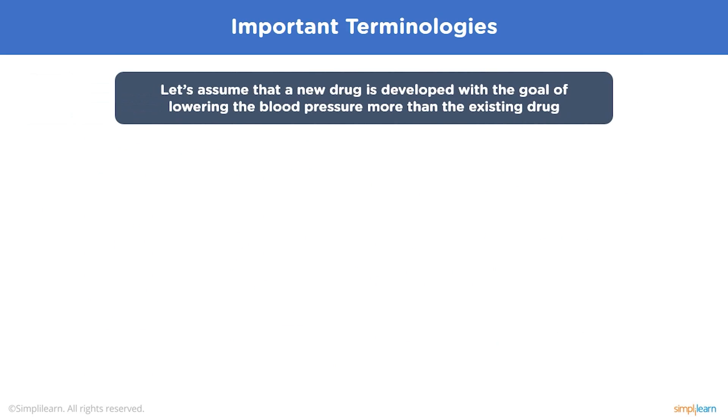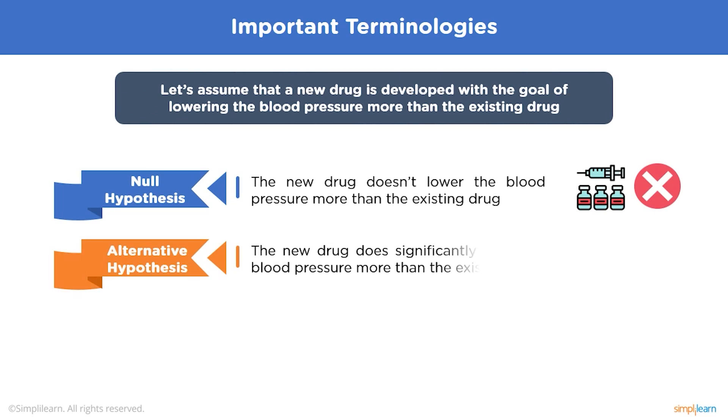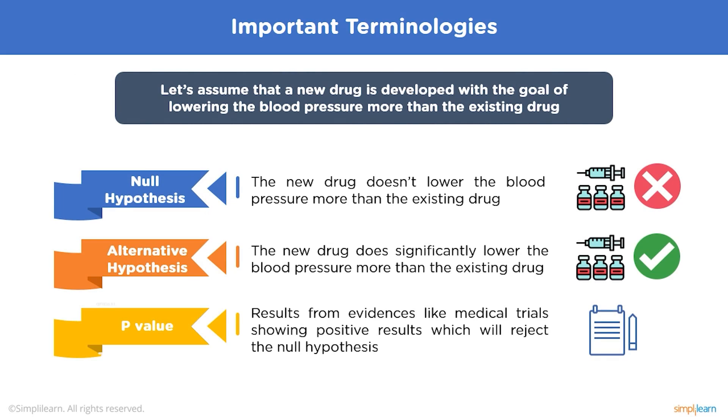Now let's try to understand these terminologies by taking an example. Let's assume that a new drug is developed with the goal of lowering the blood pressure more than the existing drug. So in this case, a null hypothesis will be that the new drug doesn't lower the blood pressure more than the existing drug. The alternative hypothesis will be that the new drug does significantly lower the blood pressure more than the existing drug. And the p-value will be the result from evidence like medical trials showing the positive results which will reject the null hypothesis.